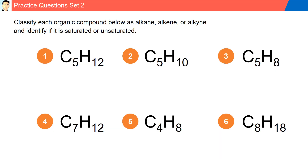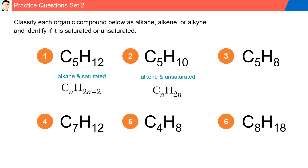Practice questions, set two. Classify each organic compound below as an alkane, alkene, or alkyne, and identify if it is saturated or unsaturated. Question one, C5H12: the number of hydrogen is double the number of carbons plus two, so it follows the formula of an alkane, and alkanes are saturated. Question two, C5H10: the number of hydrogen, ten, is double the number of carbons, five. This satisfies the formula CnH(2n), which is the formula for an alkene, and this is unsaturated. Question three, C5H8: the number of hydrogen is less than double the number of carbons, so it satisfies the formula of an alkyne, and it is unsaturated.